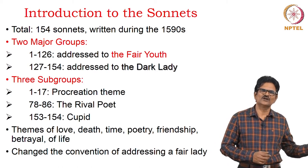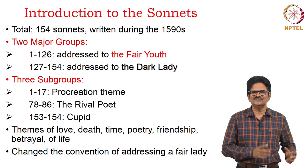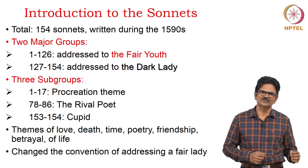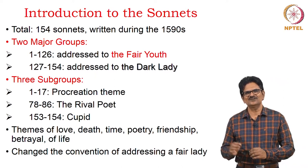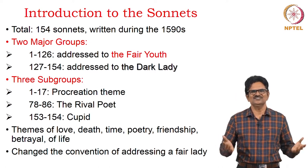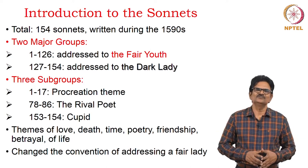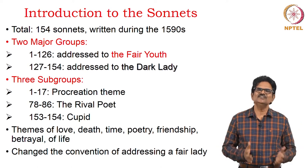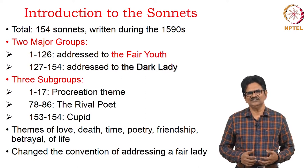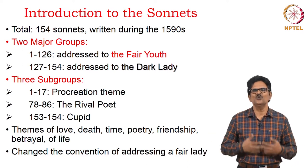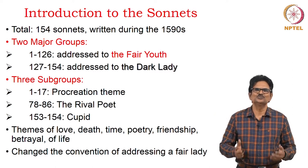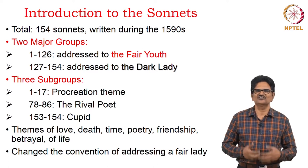We have two major groups in these 154 sonnets. The first one is from 1 to 126 — these sonnets are addressed to a person called the Fair Youth. The second part of this sonnet sequence is addressed to a lady called the Dark Lady. The exact identity of these characters we don't know; some conjectures are there of course. Within these 154 sonnets, we have some three subgroups. Sonnet 1 to 17 deal with the procreation theme. We cannot live forever — then how do we find ourselves after our death on this earth? One way is through procreation, that is, begetting children — we pass on our legacy to the future.